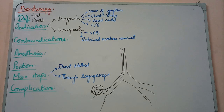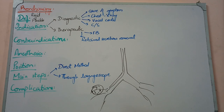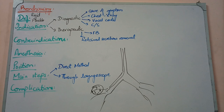First, there are diagnostic indications. This means we want to find the cause of some disease or pathology. For example, if a patient has unexplained wheezing or pain and we do not understand why these problems are occurring, we do bronchoscopy to diagnose the cause of symptoms such as hemoptysis, cough, and so on.